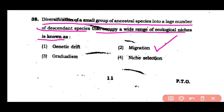The answer is option 2 — when ancestral species diversify into new descendant species which can be adopted in a wide range of ecological environments, we name this process adaptive radiation (referred to here as migration/diversification).